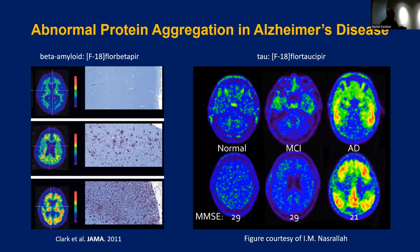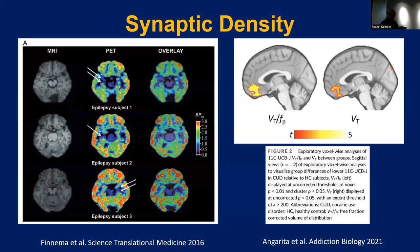Another measurable phenomenon is synaptic density. A tracer developed at Yale showed that in epilepsy subjects, areas suspected of harboring the epileptic lesion had less synaptic density. And in cocaine use disorder, there was less synapse formation in the medial frontal lobe — another way of measuring a disease phenotype. But the big contribution PET has made to understanding drugs is receptor imaging: drugs are potent because they act on receptors in your brain, and PET lets us map those receptors.